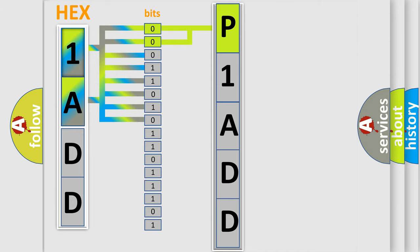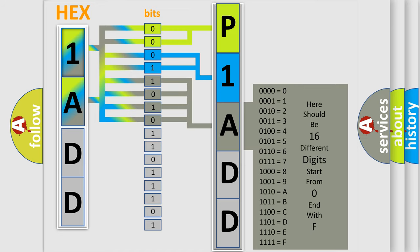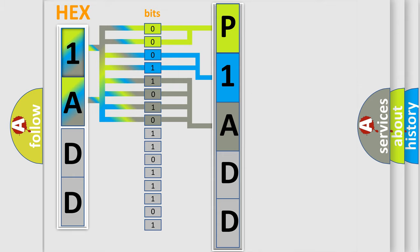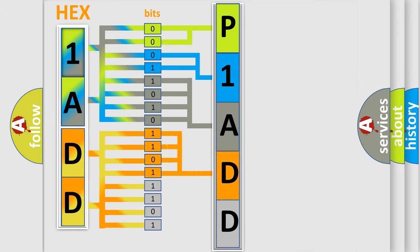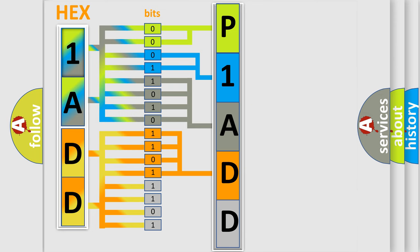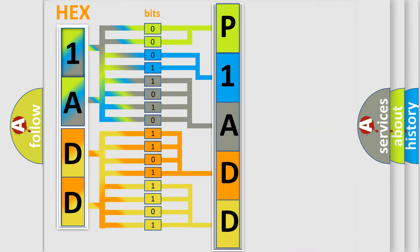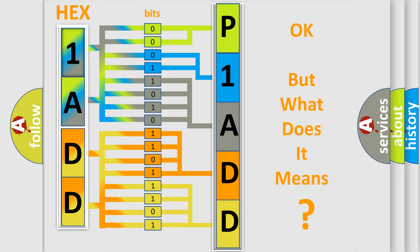The next two bits determine the second character. The last bits of the first byte define the third character of the code. The second byte is composed of a combination of eight bits. The first four bits determine the fourth character of the code, and the combination of the last four bits defines the fifth character. A single byte conceals 256 possible combinations. We now know how the diagnostic tool translates the received information into a more comprehensible format.